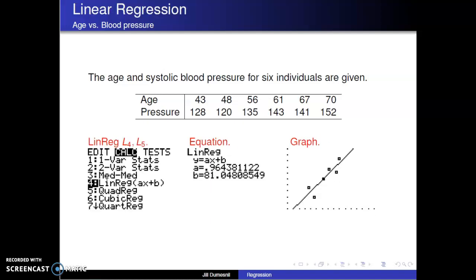Therefore, I can use linear regression on LIST4 and LIST5 to get a linear equation to model the data. The output of the linear regression is the values of A and B for the line Y equals AX plus B. I can add this line to the graph and use it to make predictions about blood pressure at various ages.